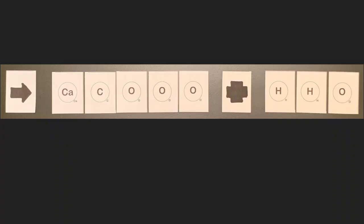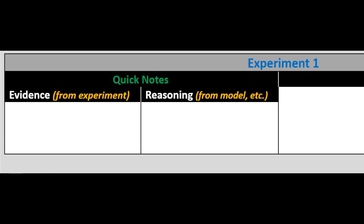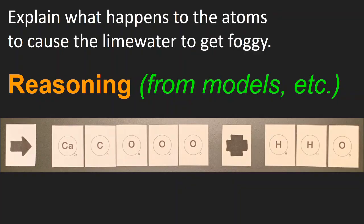With the resulting two molecules in front of you, what lesson can we learn about how atoms rearrange during a chemical reaction? Take a few moments for silent think time and silent write time. Write brief reasons in your lab doc in the Quick Notes reasoning box. Using reasoning from the atom tiles, why does the lime water get foggy? Share your reasoning with a neighbor and add any new ideas to your notes, then resume this lab.